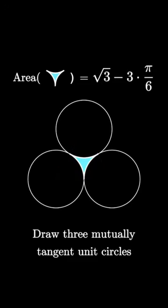So the area we want is the square root of 3 minus 3 times pi over 6, which simplifies to the square root of 3 minus pi over 2.